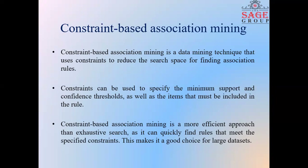Constraints can be used to specify the minimum support and confidence thresholds as well as the items that must be included in the rule. Constraint-Based Association Mining is a more efficient approach than exhaustive search as it can quickly find rules that meet the specified constraints. This makes it a good choice for large datasets.